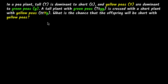Let's solve a couple of problems on dihybrid cross. We're given a pea plant where tall is dominant to short, and yellow peas are dominant to green peas. A tall plant with green peas with this particular genotype is crossed with a short plant with yellow peas with this particular genotype. What is the chance that the offspring will be short with yellow peas?